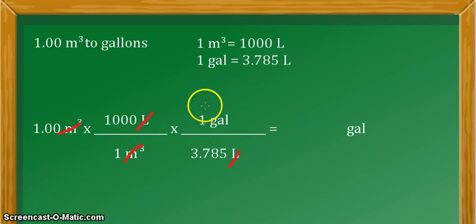We are now left with the final unit, which is gallons. Then we do the calculation, which will give us our answer for this case: 264.2 gallons. This means that 1.00 cubic meter contains approximately 264.2 gallons.